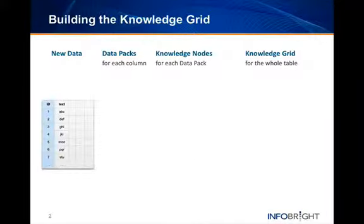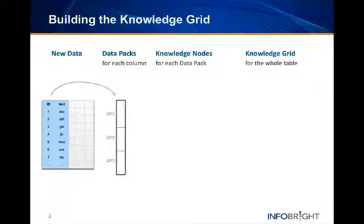As the data is being loaded, it's first parsed into columns. Each column is then divided into equal groupings of elements, called data packs. Each data pack contains 65,536 elements.